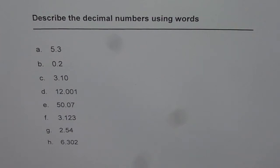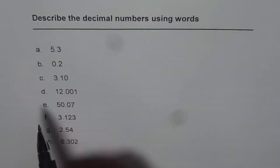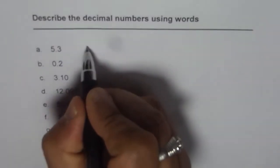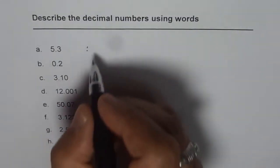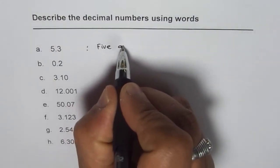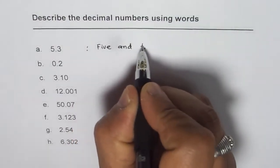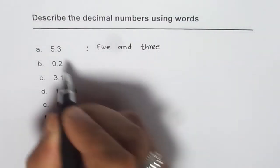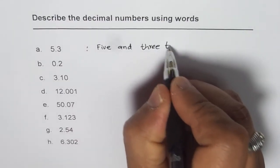I will help you describe these words in two different ways. One is the standard way where we use AND for the decimal point. So for the first one, when it is 5.3, we can write this as 5 and 3 tenths, as 3 is in tenths position.